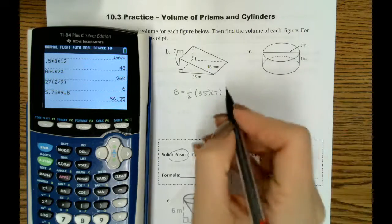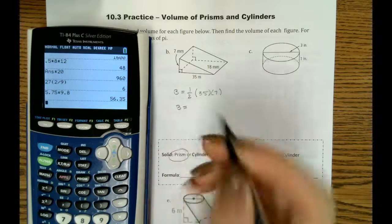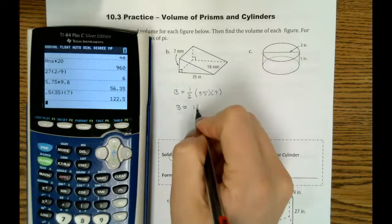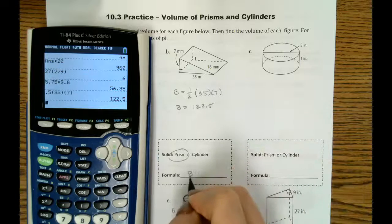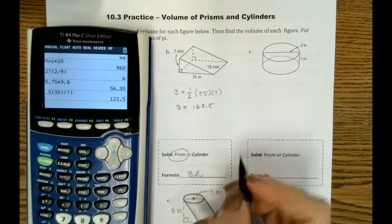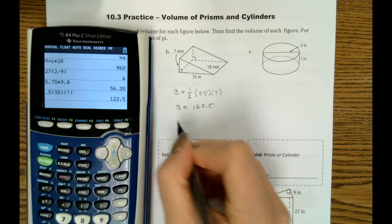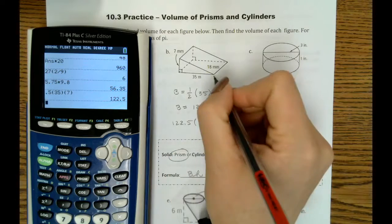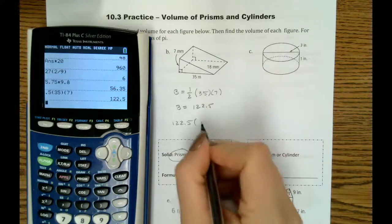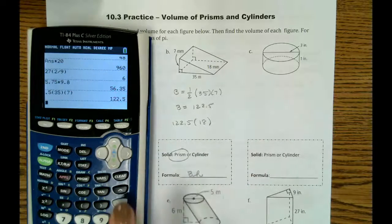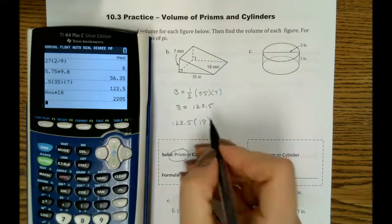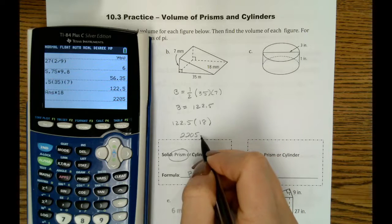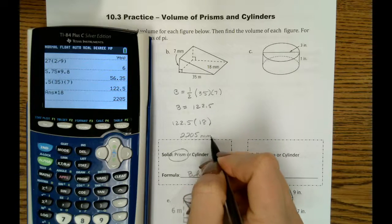And that will get us our area of our base, which is 122.5. So then here we're going to do our area of our base, 122.5 times the height, which is 18 of our prism. For a total volume of 2,205, and this is cubic millimeters.